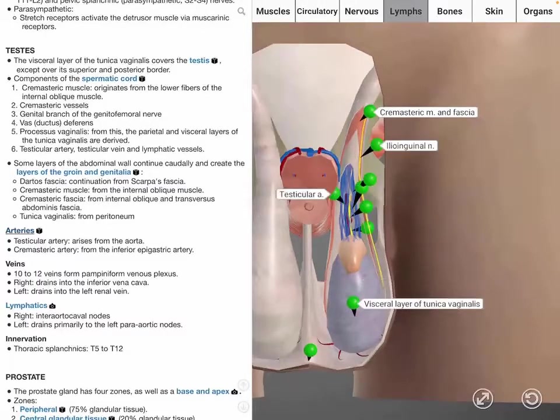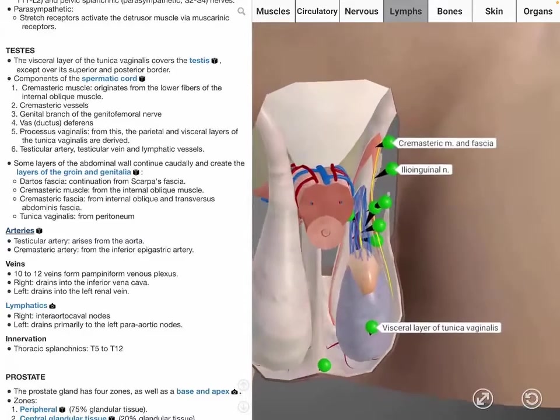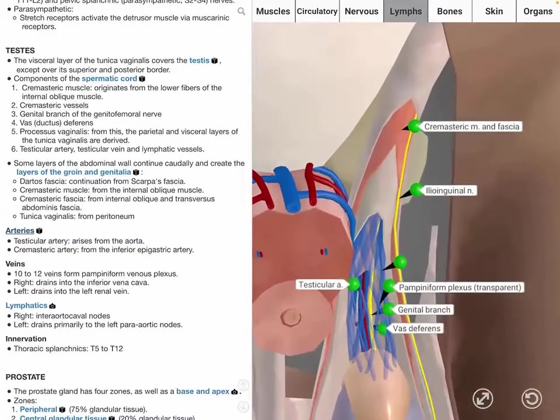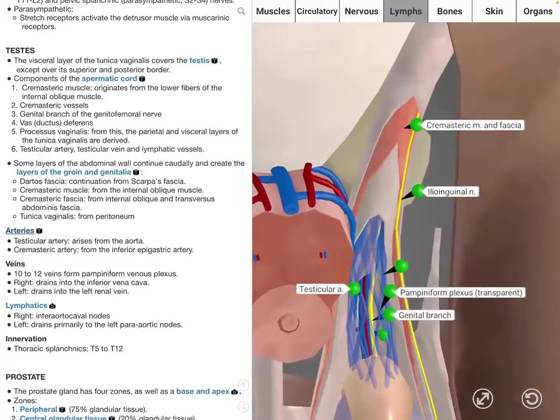The testicular vein begins in the testes as an extensive venous plexus known as the pampiniform plexus. The left testicular vein drains into the left renal vein, and the right drains directly into the inferior vena cava.